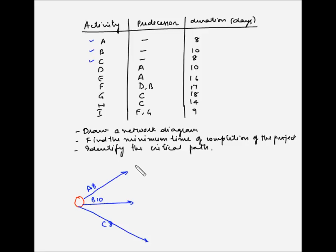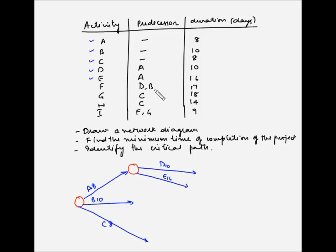Next are D and E which are dependent on A. This is the ending node for A, and from here we draw D and E. D takes 10 days and E takes 15 days for completion. Next is F which is dependent on D and B. D is here and B is here, so D and B will have to merge into one node and then from there we take out F.